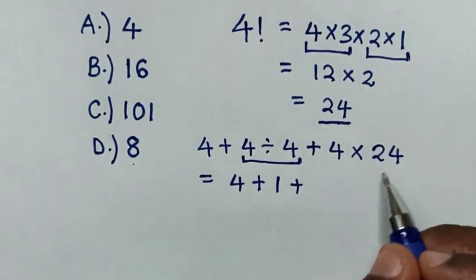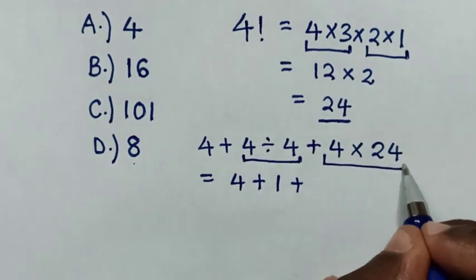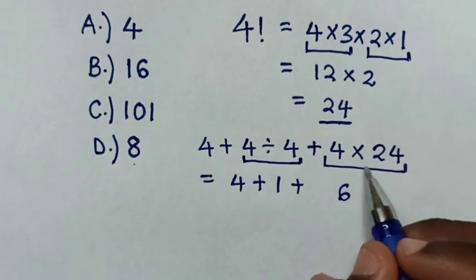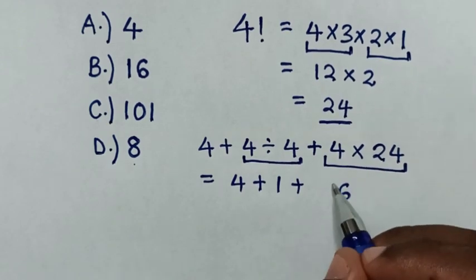We will deal with this multiplication of 4 times 24. So 4 times 4 is 16, so go with 1, 4 times 2 is 8, plus 1 is 9.